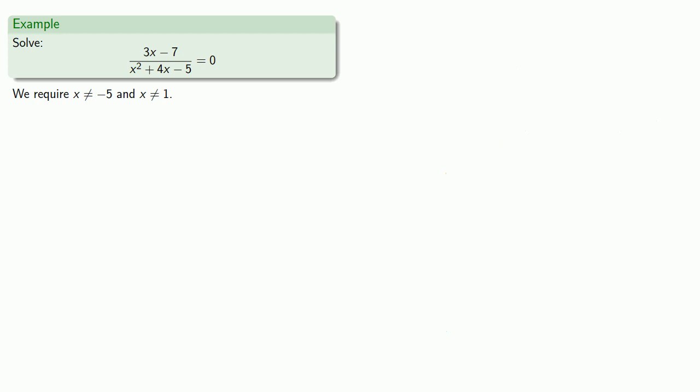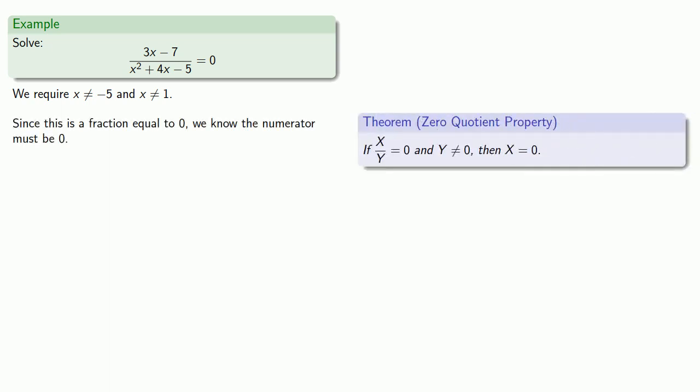Now our rational expression is essentially a fraction. And since this is a fraction equal to zero, we know the numerator must be zero. And so we must have three x minus seven equal to zero, and we can solve this.